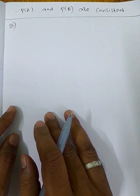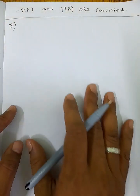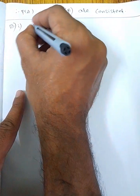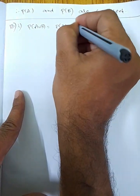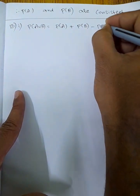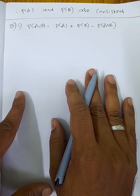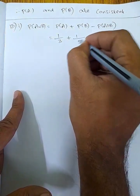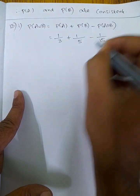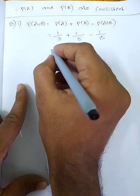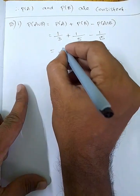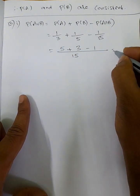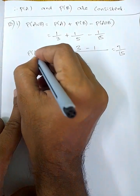So next, 13th question. Fill in the blanks — one of the values. The formula we apply is the addition theorem of probability: P(A∪B) is equal to P(A) plus P(B) minus P(A∩B). Send out and get the values — P(A), P(B), P(A∩B), and P(A∪B). Here LC 15: 3 by 15 minus 1, so 5 plus 3 is 8, minus 1, so 1 by 15. This is P(A∪B).